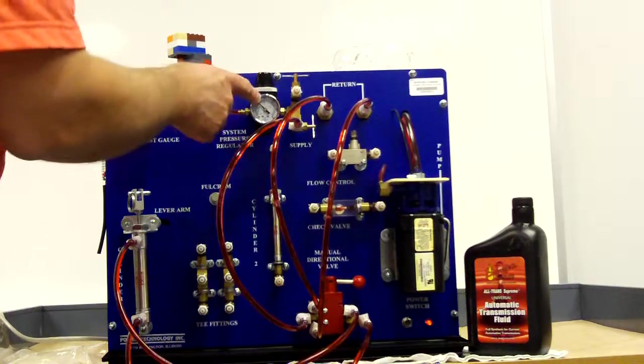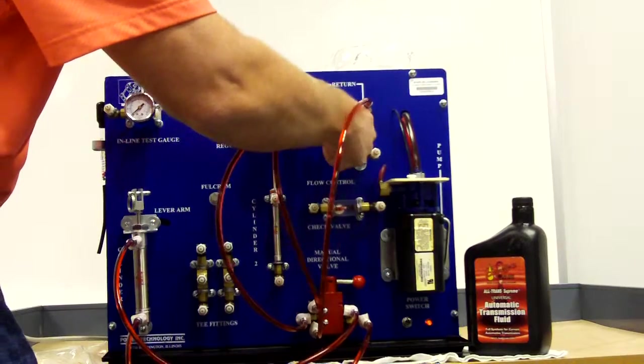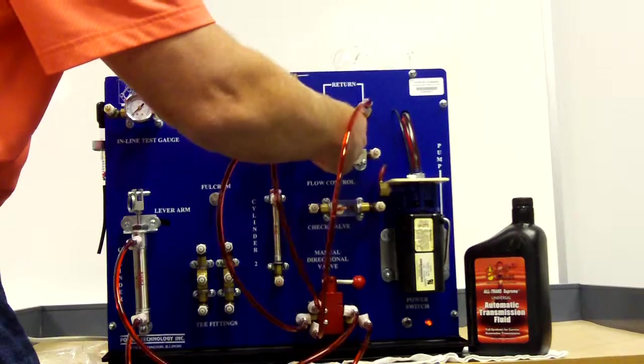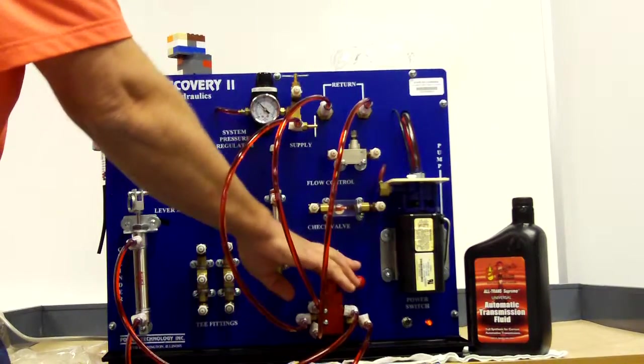Pump back on. We have pressure here, but we didn't energize the system by turning on the valve. Right there at the pressure. So now we've allowed the pressure to fill the tubes all the way to the directional control valve.